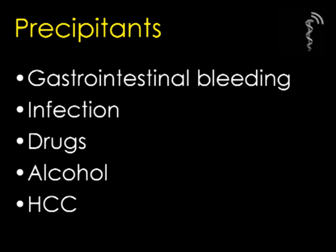The precipitants of decompensation can be multivariant and each has to be assiduously excluded and treated. These include gastrointestinal bleeding such as a variceal or gastric variceal bleed; infection including chest infections, urinary infections, or spontaneous bacterial peritonitis; drugs such as opiates, which may cause an episode of encephalopathy in those who are cirrhotic; an excess of alcohol or a step up in the amount of alcohol taken; or the development of a tumour such as hepatocellular carcinoma, which may also induce decompensation.